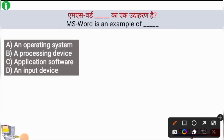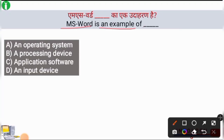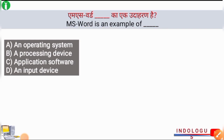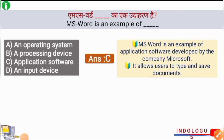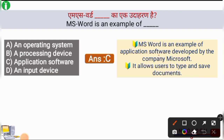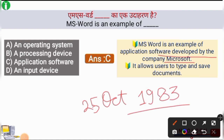The first question is: MS Word is an example of what? The right and most appropriate answer for this question is option number C, application software. MS Word is an example of application software which was developed by the company Microsoft. Its releasing date was 25th October 1983. MS Word allows users to type and save documents.